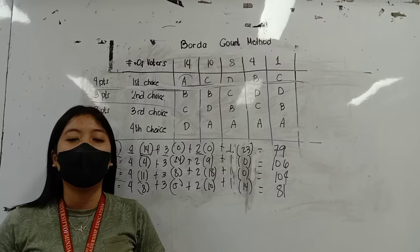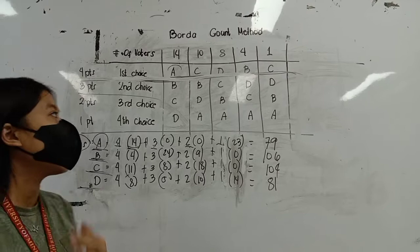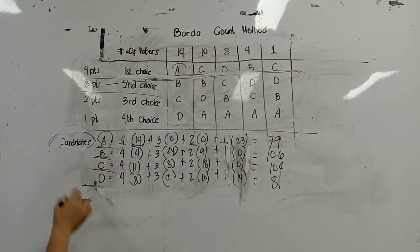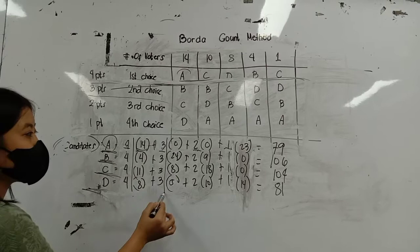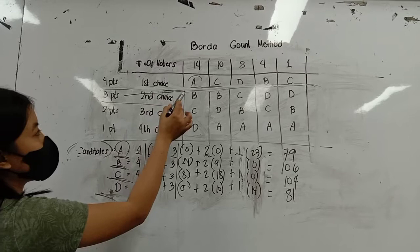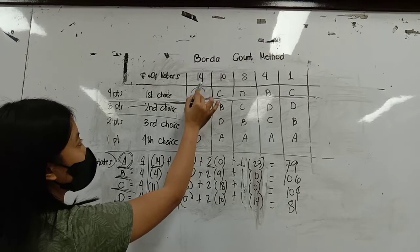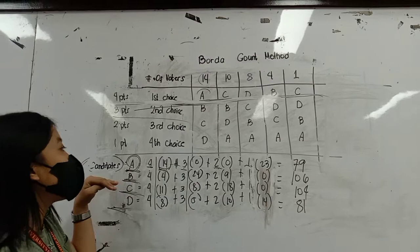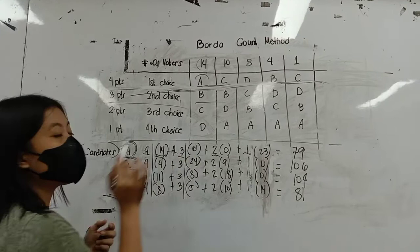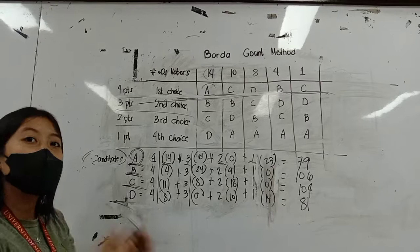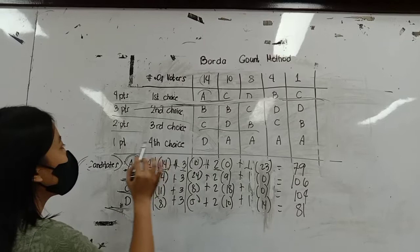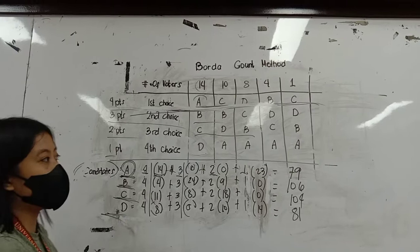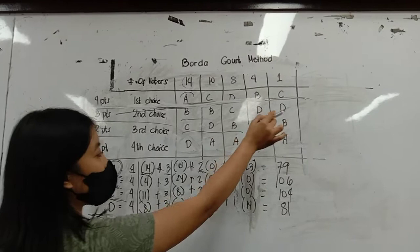We have another approach to solving the Borda Count — the landscape way of solving. Candidates A, B, C, and D receive four, three, two, and one points respectively. For candidate A: at four points, A appears 14 times; at three points, zero; at two points, zero; at one point, four times. Multiplying and adding: 4 times 14 plus 0 plus 0 plus 1 times 4 gives a total of 79 votes for A.